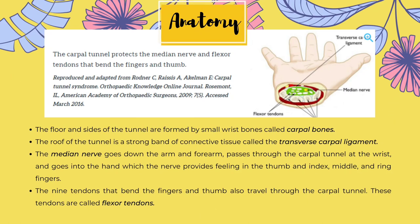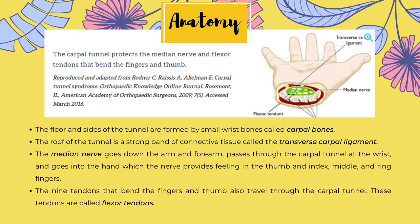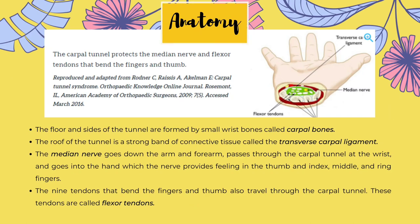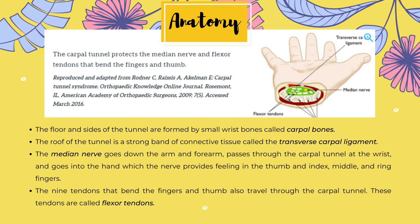The roof of the tunnel is a strong band of connective tissue called the transverse carpal ligament. Because these boundaries are very rigid, the carpal tunnel has little capacity to stretch or increase in size. The median nerve is one of the main nerves in the hand. It originates as a group of nerve roots in the neck, which come together to form a single nerve in the arm. The median nerve goes down the arm and forearm, passes through the carpal tunnel at the wrist, and goes into the hand.